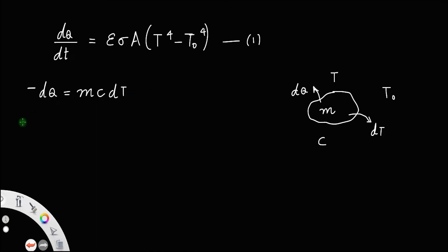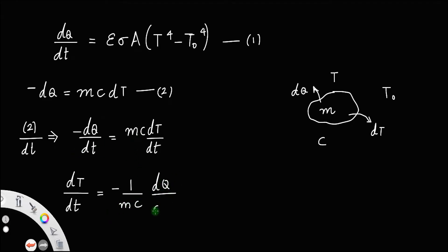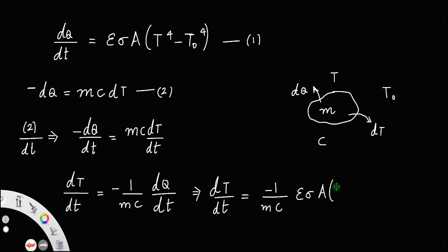If you divide equation 2 by the time interval dt, you get minus dQ/dt equal to mC dT/dt. Rearranging, the rate of change of temperature with respect to time is equal to minus 1 over mC times dQ/dt. Instead of dQ/dt, substitute the value from equation 1: epsilon sigma A times (T⁴ minus T₀⁴). Let us call this equation number 3.